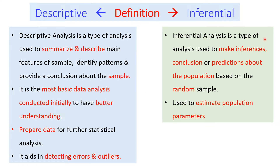On the other hand, inferential analysis is a type of quantitative data analysis used to make inferences, conclusions, or predictions about the population based on randomly taken samples. Unlike descriptive analysis, it is used to make inferences about the population and to estimate population parameters. Inferential analysis is used when we want to conclude about the population or study the cause-and-effect relationship between variables.